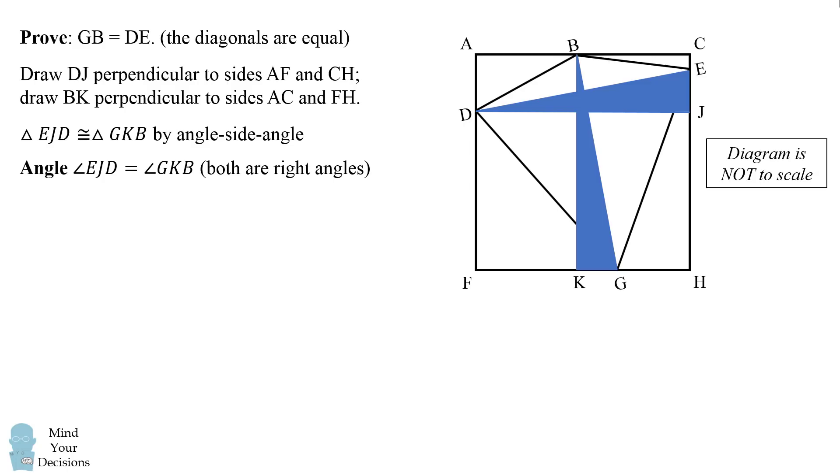Well, one angle is congruent. Angle EJD is equal to angle GKB because both are right angles by construction. Next, side DJ is equal to BK because these are both equal to the square side length. We constructed these so that they're perpendicular to two sides of the square. So they'll be parallel to the other side of the square. So we can say that DJ equals BK equals the length of the square.